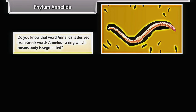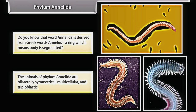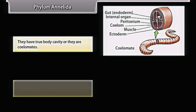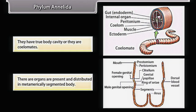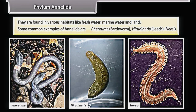Annelida is derived from Greek word 'analis' (ring), meaning the body is segmented. The animals are bilaterally symmetrical, multicellular, and triploblastic. They have a true body cavity — they are coelomates. Organs are present and distributed in a metamerically segmented body. They are found in various habitats like freshwater, marine water, and land. Common examples are earthworm, Hirudo (leech), and Nereis.